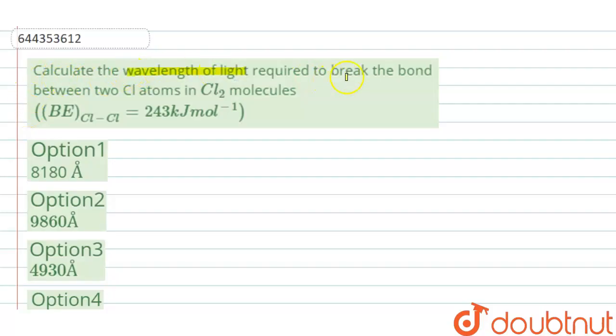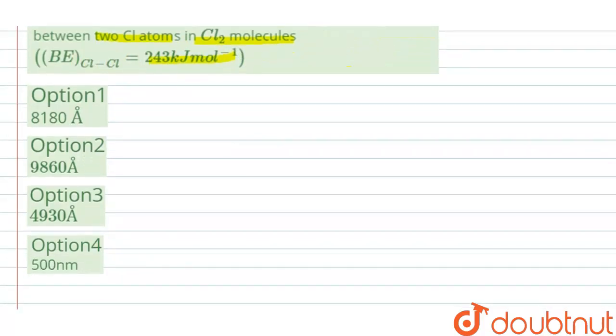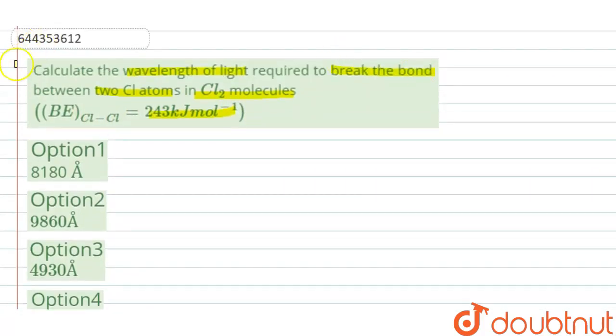of light required to break the bond between two chlorine atoms in Cl2 molecule. The bond energy between two chlorine atoms is given to be 243 kilojoules per mole, and these are the options. So as in the question